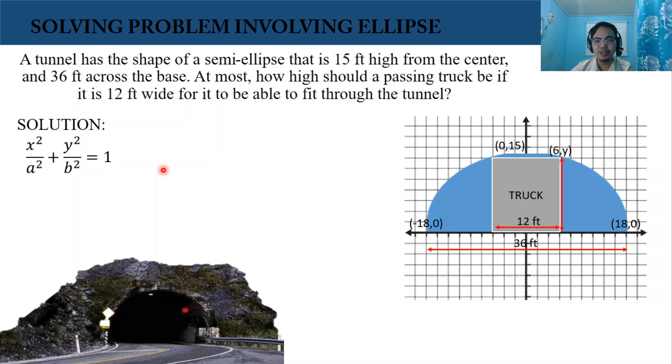Then substitute the values. From the center going to this point, this is our a. So this is 18. Then from the center going to this point, this is 15. That is our b.